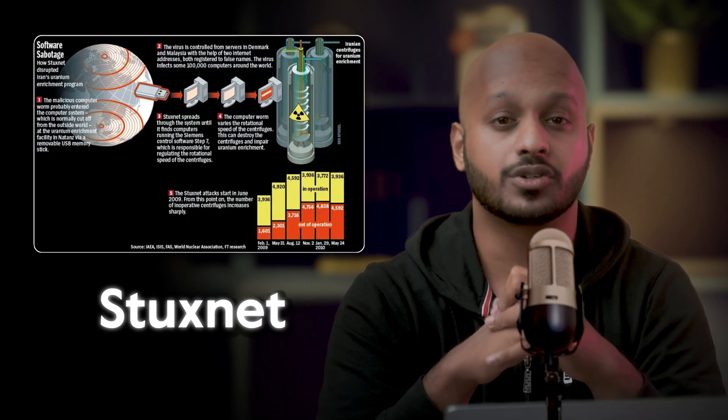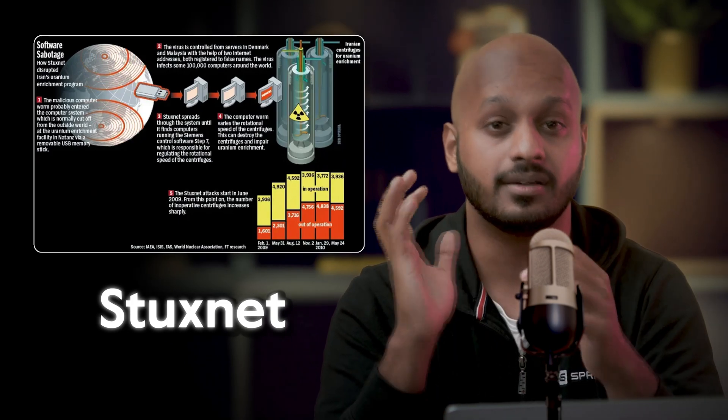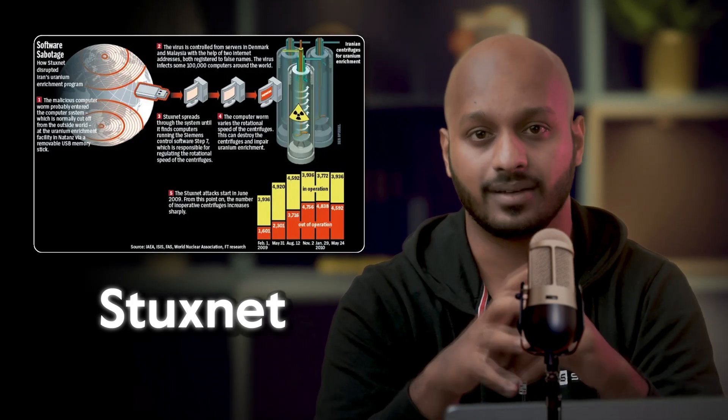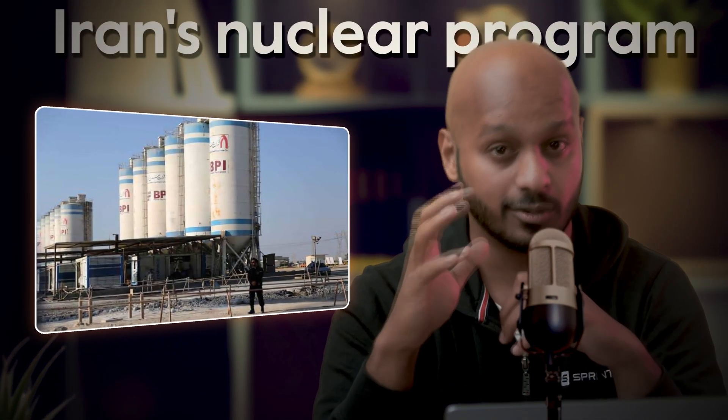Stuxnet is probably one of the most famous industrial-scale examples of malware in history. A highly sophisticated computer worm that targeted Iran's nuclear program, it caused substantial damage to Iran's nuclear centrifuges, significantly setting back the country's nuclear program. Let's take a look at the different kinds of malware.